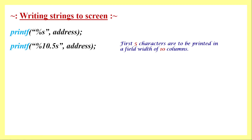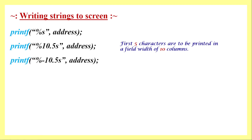Initially we only use '%s', which doesn't specify a field width. With a format like '%10.5s', the value after the decimal point — 5 — specifies that only the first 5 characters of the string will be printed, and they will be printed in a field of width 10 columns. By default, with no sign specified, this is treated as positive and the output will be right-justified.